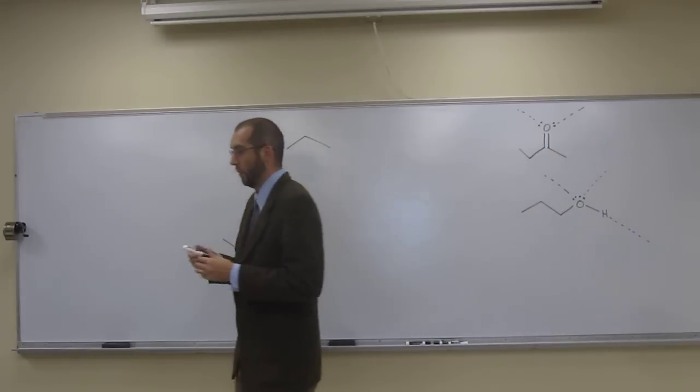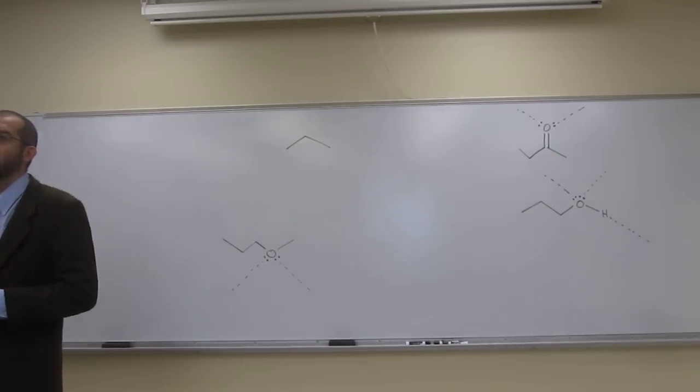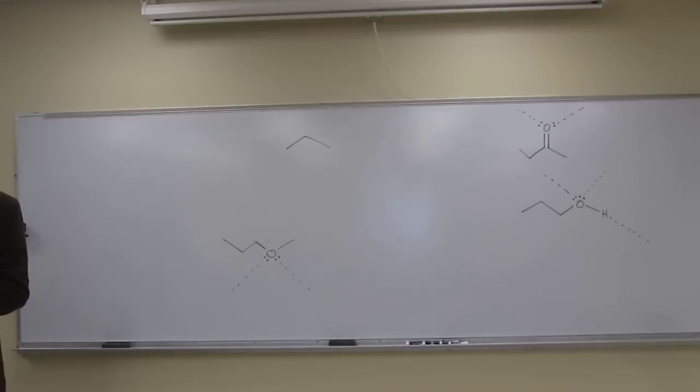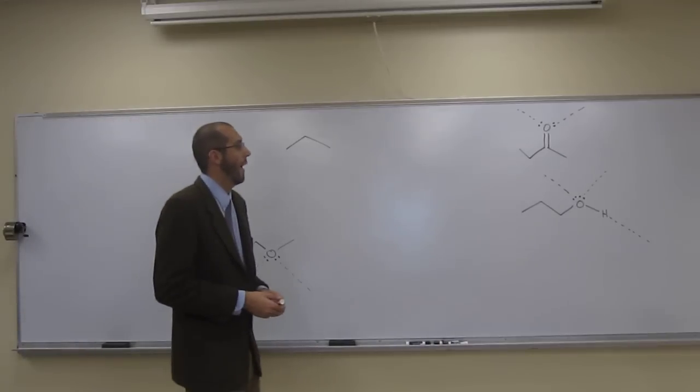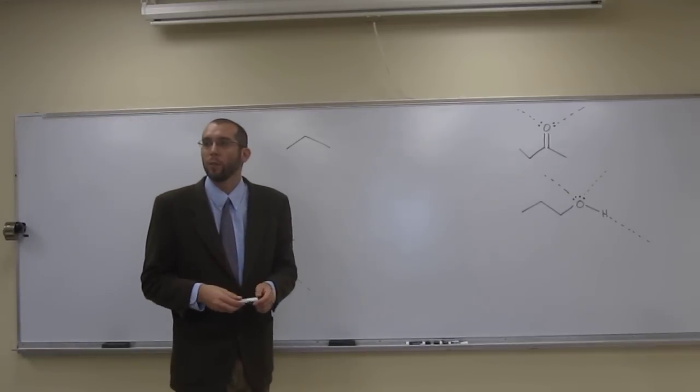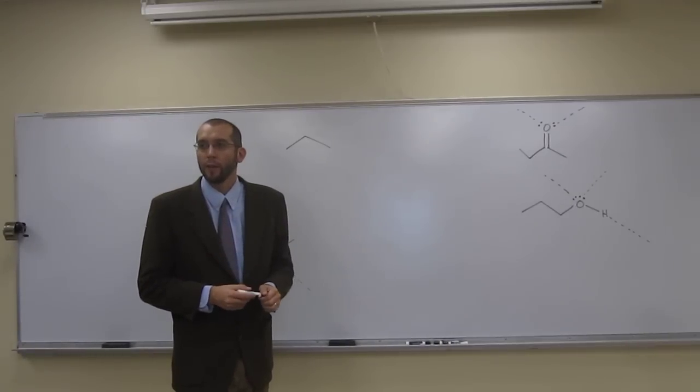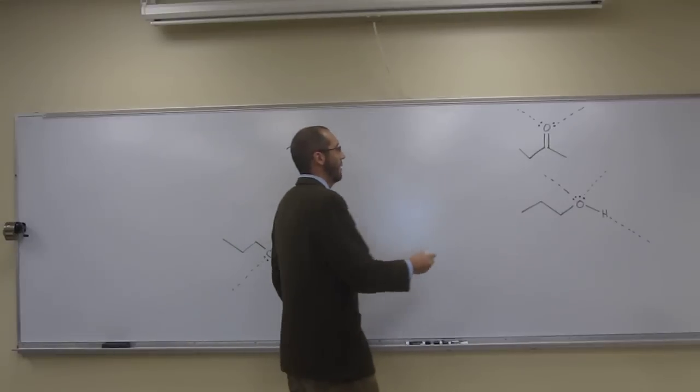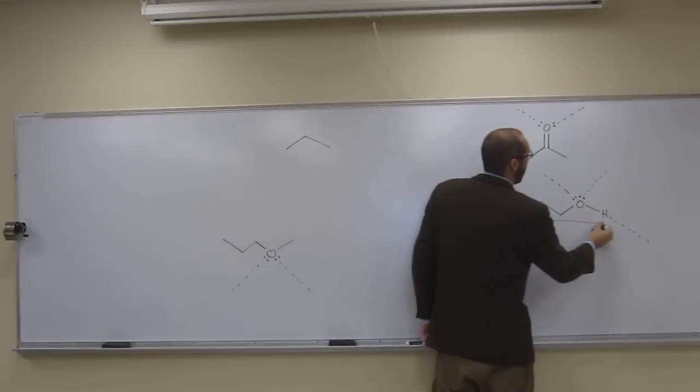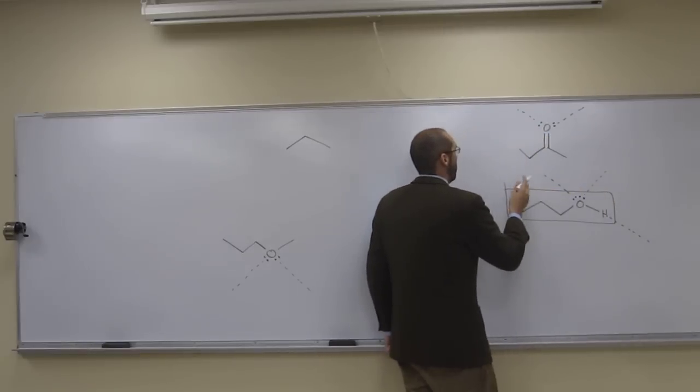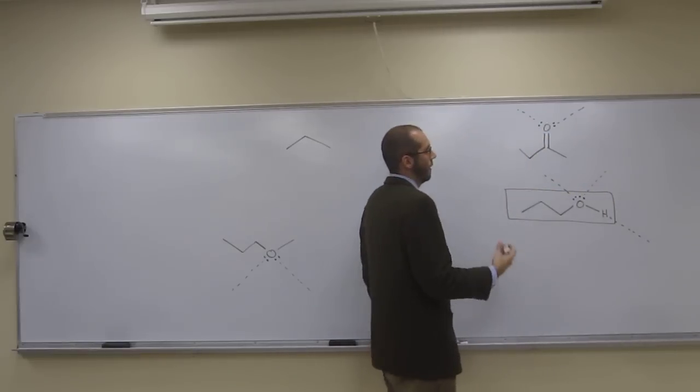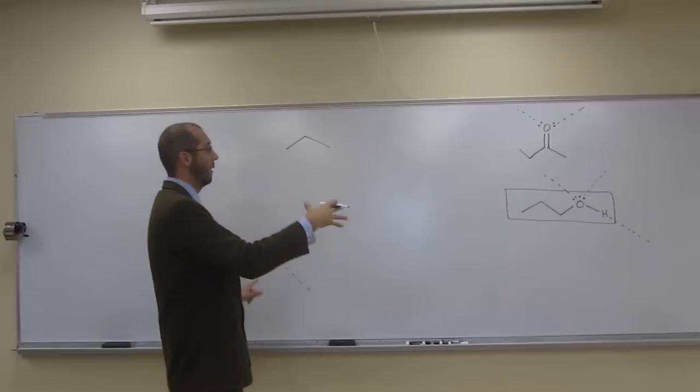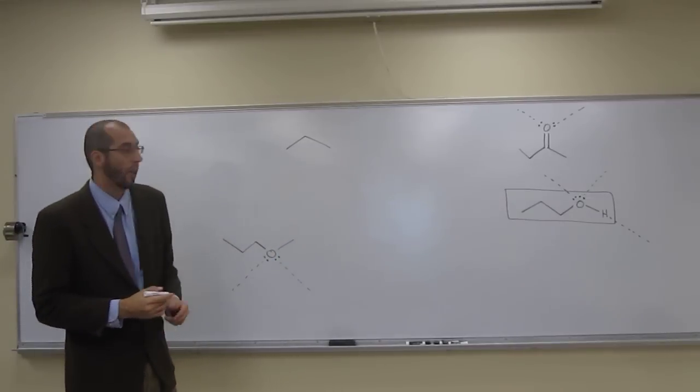So what you find is when you've got both the donors and the acceptors, that's going to raise your boiling point significantly. So the question asked us which one of these would we expect to have the highest boiling point? I would say it's definitely propanol. Because it's got the two acceptors, which everything else does, but plus the donor.